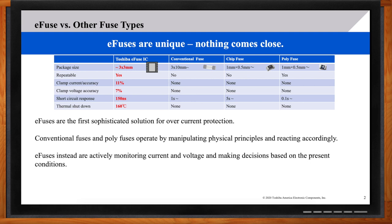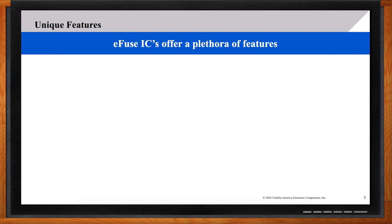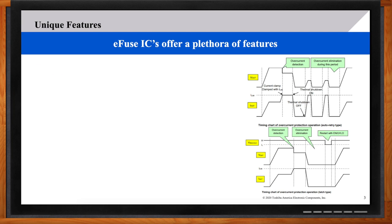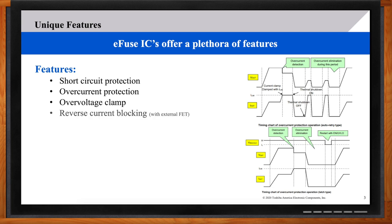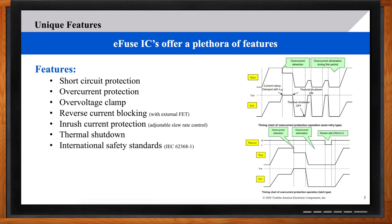Tell me a little bit about the unique features of Toshiba's e-fuses. The e-fuse offers a plethora of features. The highest level ones are short circuit protection, overcurrent protection, overvoltage clamp, reverse current blocking. And we accomplish this with an external FET. Our e-fuse has an external FET pin, which is a gate driver for an external FET to allow for reverse current blocking. Inrush current protection, which is when you have adjustable slew rate control. And this is accomplished by placing a capacitor. And the slew rate control pin has thermal shutdown, internationally standardized. IEC 62368-1, which you'll be seeing appearing December 2020. And it has a clamp type and an auto-retry type.